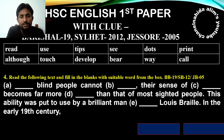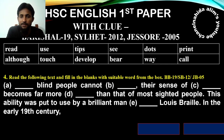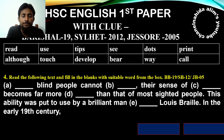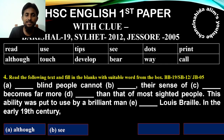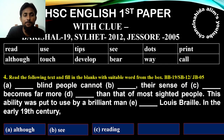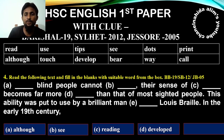Deaf people cannot see. A number of people cannot see. All the blind people can see their sense of reading — their sense of reading is far more developed than that most sighted people can see.